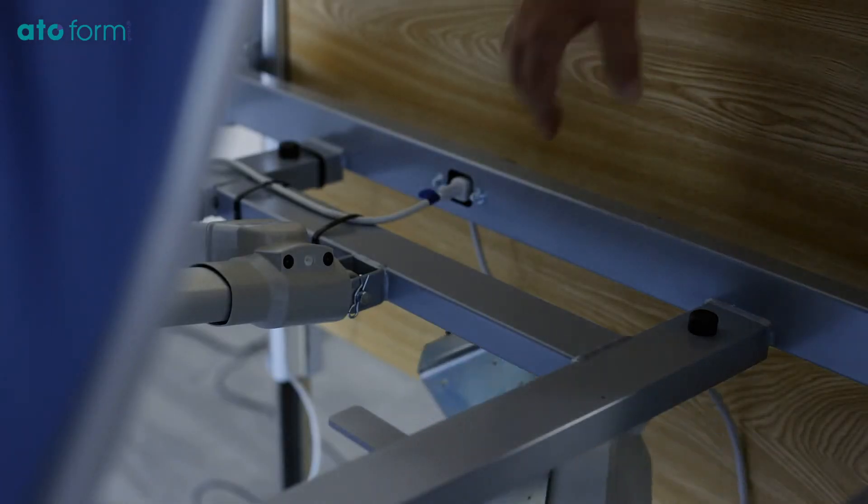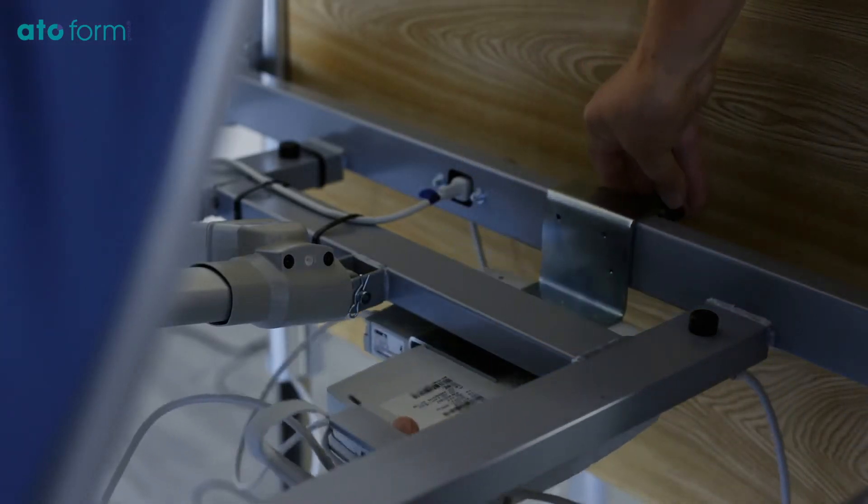The control box is placed on the frame at the head of the bed, then tighten the screws.